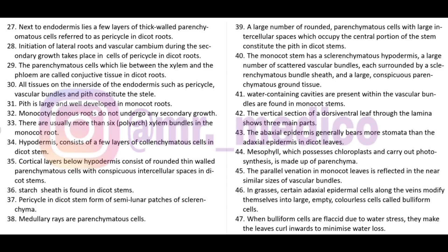The parenchymatous cells which lie between the xylem and phloem are called conjunctive tissue in dicot root. All tissues on the inner side of the endodermis - pericycle, vascular bundle, and pith - constitute the stele. Remember: PVP - Pericycle, Vascular bundle, Pith.